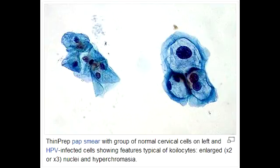Coilocytes are dysplastic squamous cervical cells with nuclear enlargement and hyperchromasia. Define hyperchromasia: hyperchromasia refers to the hyperchromatic state of the nucleus, in which there are elevated levels of chromatin. In what conditions do Coilocytes occur?